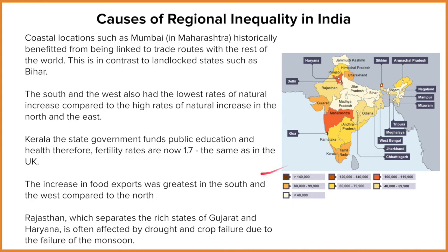Kerala's fertility rate is now 1.7 — the same as the UK. On average, a woman in Kerala would have between one and two children, whereas the rest of India are having perhaps three or four. This means the resources Kerala has can be spread more evenly across its population, including things like food, water, and access to services like education and health.